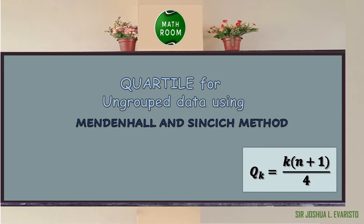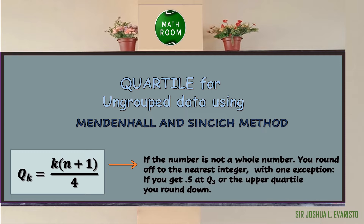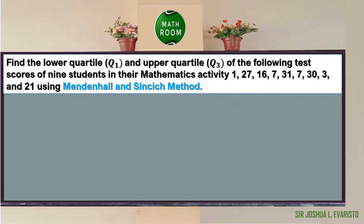With the Mendenhall and Sinsic method, you first calculate the position of the quartiles using the formula Q sub k = k(n+1)/4. If the number is not a whole number, you round off to the nearest integer — with one exception: if you get 0.5 at Q sub 3 or the upper quartile, you round down. Let's have an illustrative example: find Q sub 1 and Q sub 3 of the following test scores of 9 students.